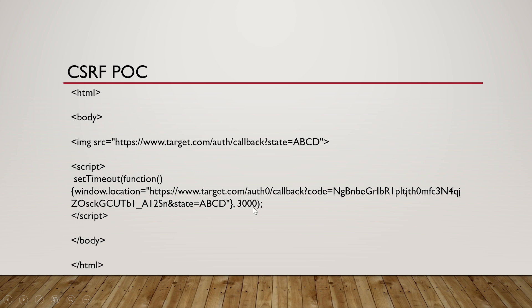After three seconds, a particular function is going to be initiated and that function is going to load a URL which contains the code. That particular code was generated by the attacker in their OAuth flow — it belongs to the attacker. And as you can see, it also uses the fixated state value ABCD. So once the victim loads this URL, it will fix the state parameter first and after that trigger the linking action.